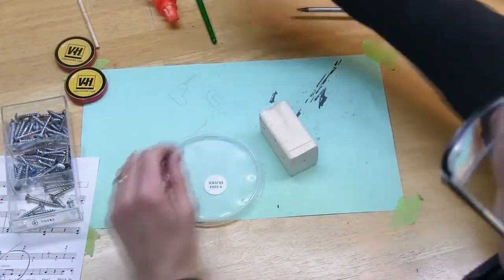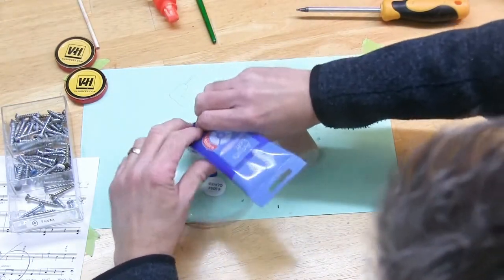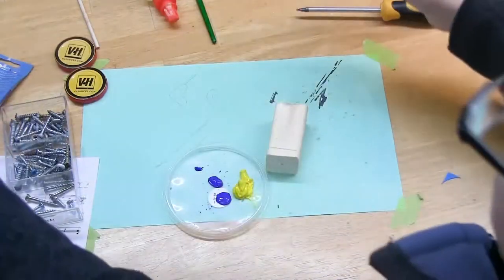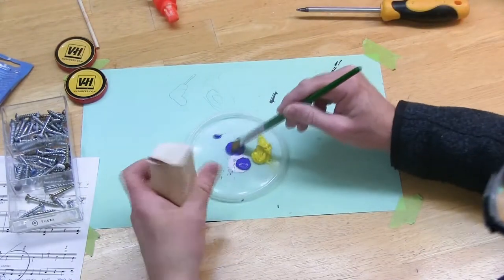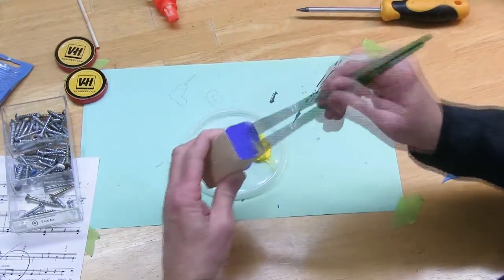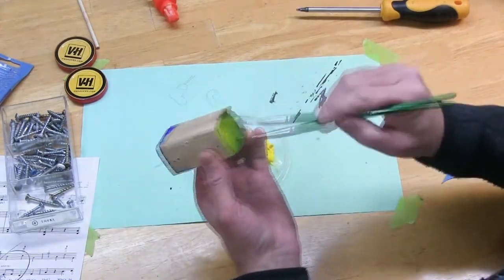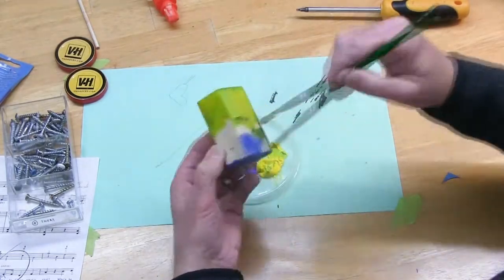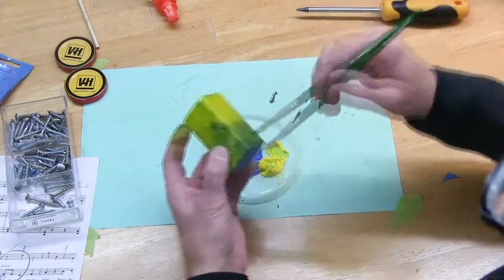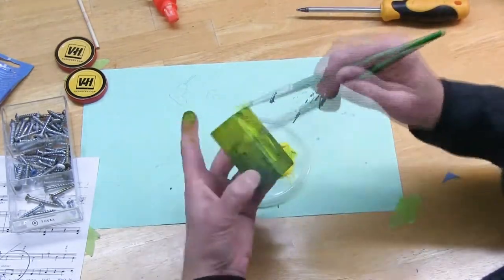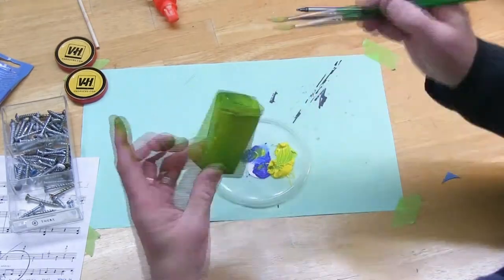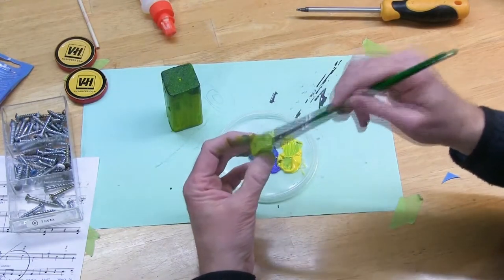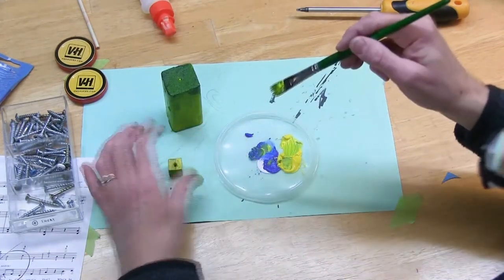First thing we're going to do is give this a little bit of a paint job. Got some glue. Looks like that's the last of my blue. And a little bit of yellow. I'm just going to mix those together. One more block. We'll do that one in yellow as well.